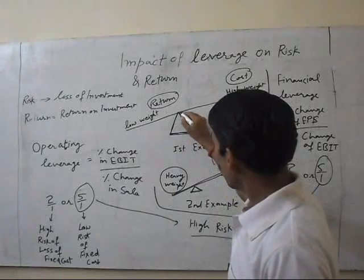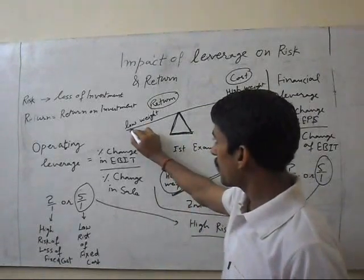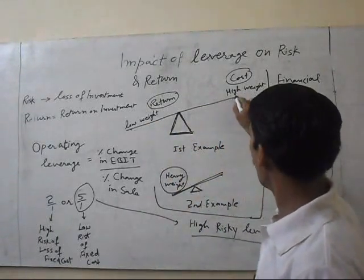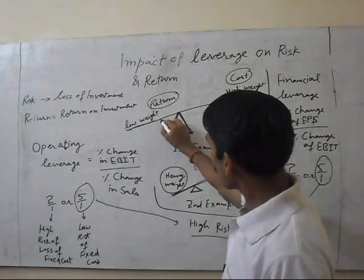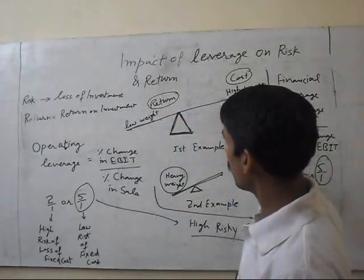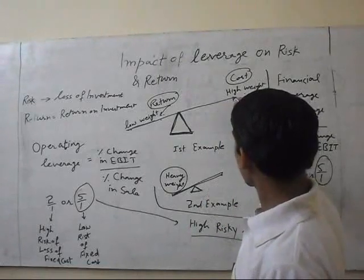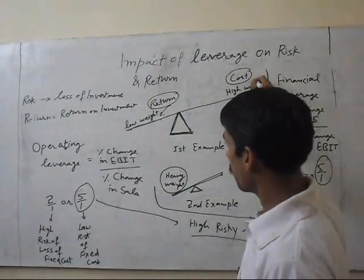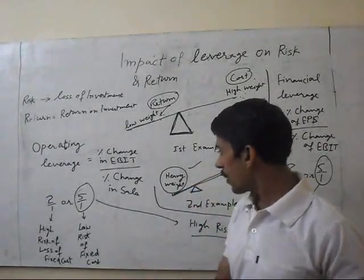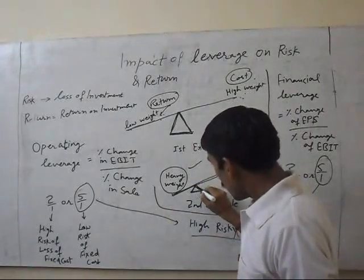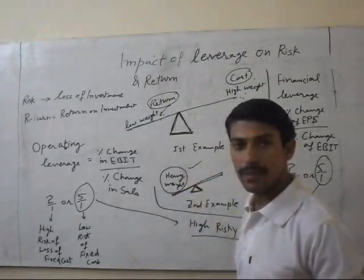Suppose, in physical science, we are seeing its examples. This person is low weight and this person is high or heavy weight. But this low-weight person can lift the high-weight person. This shows our return, but this shows our cost. Second example: if you want to lift a high weight, you take a leverage and then you can lift it.